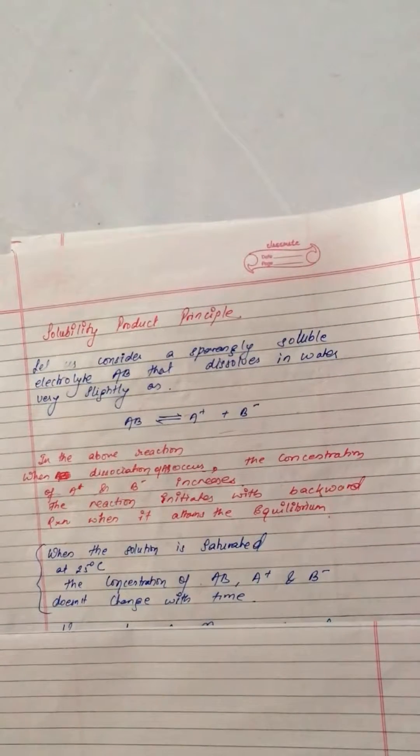In the above reaction, when dissociation occurs, the concentration of A plus and B minus increases until the backward reaction allows the system to attain equilibrium.